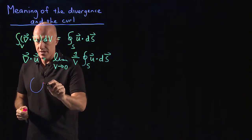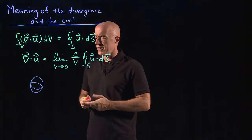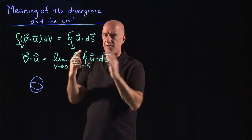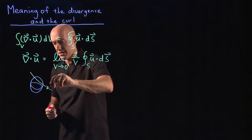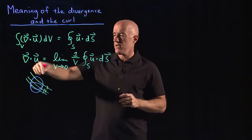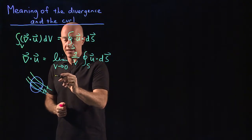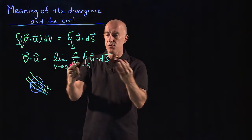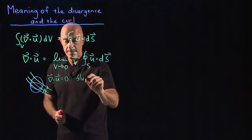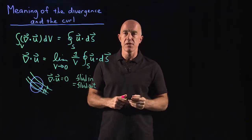Let's look at a volume surrounded by a surface — say something like a sphere. If the surface integral of u·dS equals zero, this would be like placing a sphere in an incompressible fluid. If you have a fluid flow where the density doesn't change, then the flow going through the surface — the amount of fluid going through — equals the amount coming out. So fluid in equals fluid out, and del·u is zero.